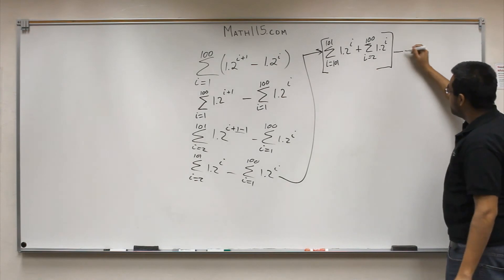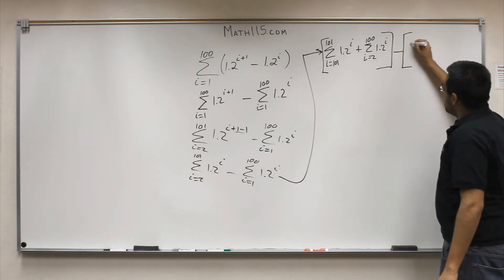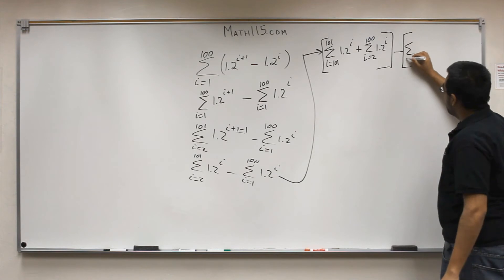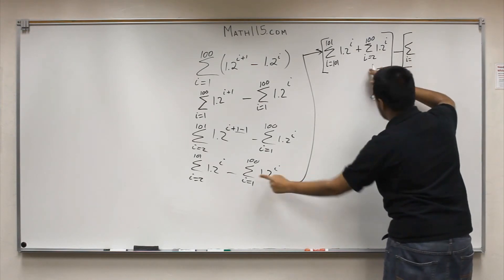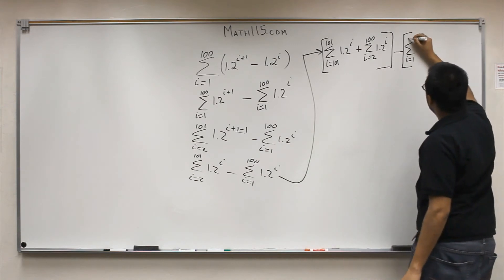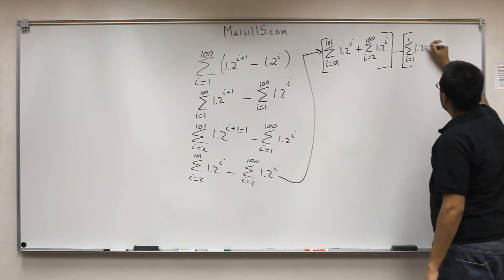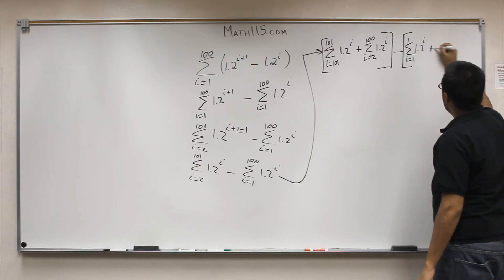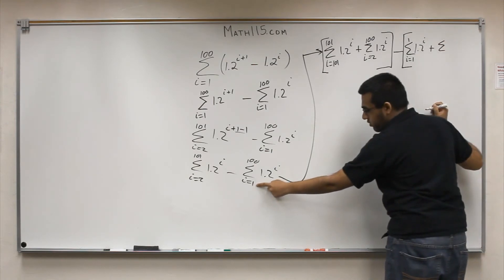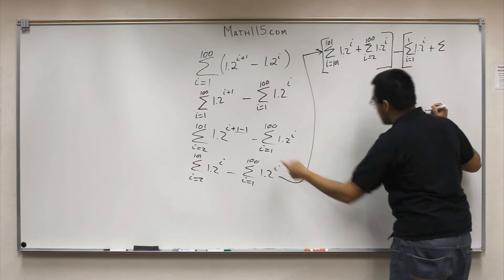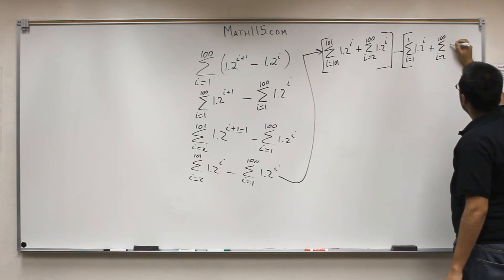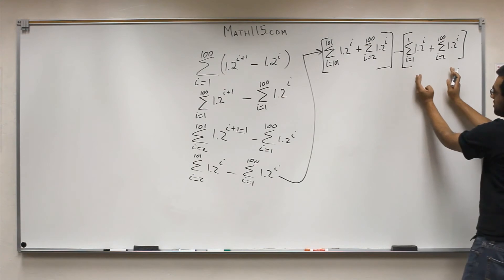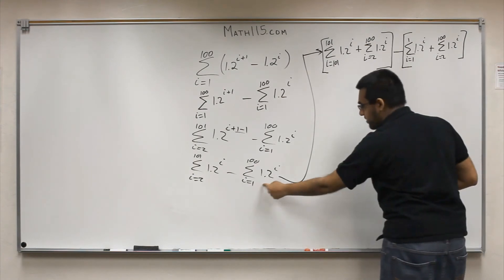Now let's deal with the right side. We have a minus sign in between, and I'll put another bracket here. For the right summation from 1 to 100, the term at i equals 1 is not part of the overlapping portion, so we'll have a summation from i equals 1 to 1 of 1.2^i, plus the summation from i equals 2 to 100 of 1.2^i. We only took care of the i equals 1 term; the 2 to 100 portion remains. These two summations together are the same as the original right-side summation.